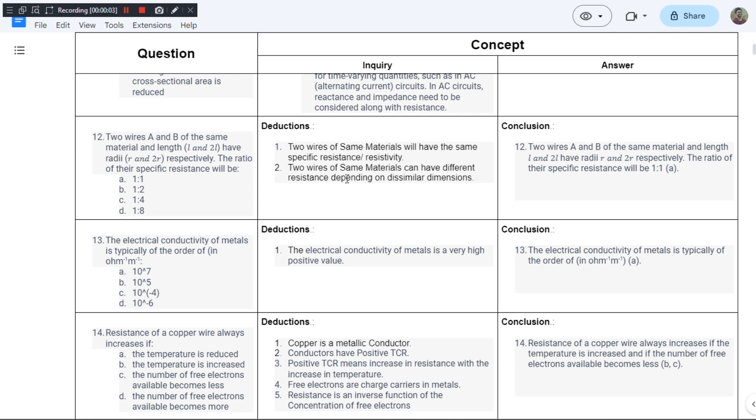This is question number 12 from chapter 1 of JB Gupta's book and the question says two wires A and B of the same material. So we have got two wires of same material.